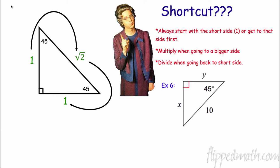We can use our shortcut here. Always start with — or get to — the short side first. When you go to a bigger side, you multiply; when you go back to the smaller side, you divide. Going from 1 to √2, you multiply by √2. Going from √2 back to 1, you divide by √2.